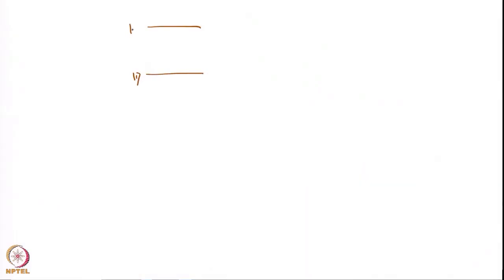Suppose there are two states 1 and 2. Initially there is a population n1 at time t equals zero, and n2 at time t equals zero. If the energy separation between states 1 and 2 is very large, then n2(0) will be equal to zero — let us call n1(0) as 100 percent and n2(0) as 0 percent. Then you shine light h-nu corresponding to delta-E equal to E2 minus E1, and you will transfer some population.